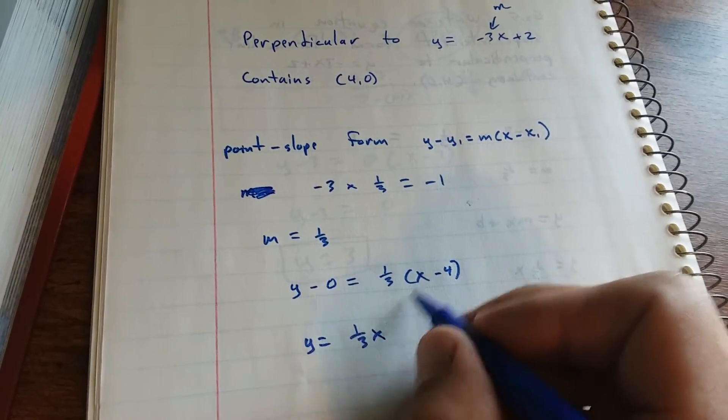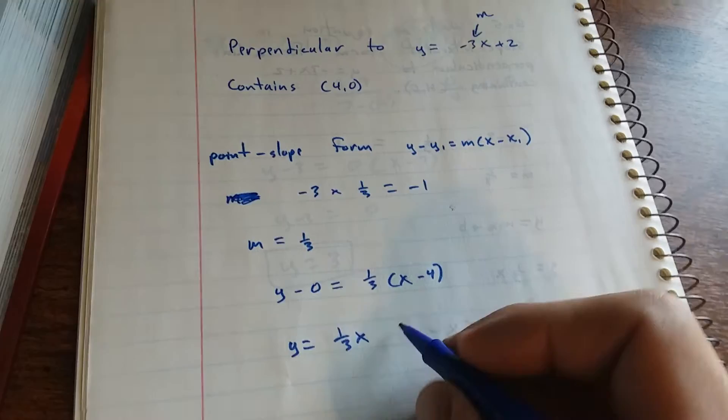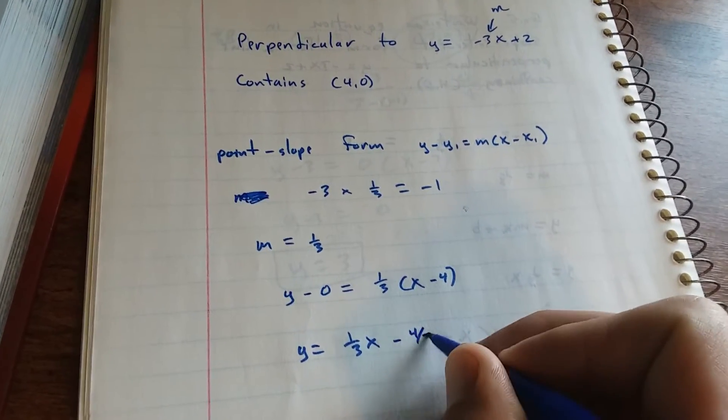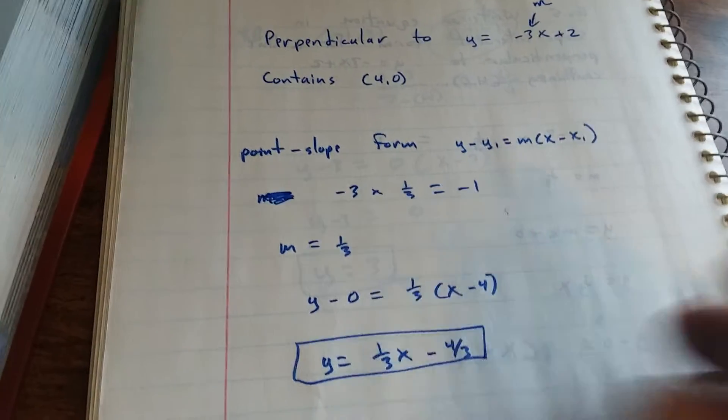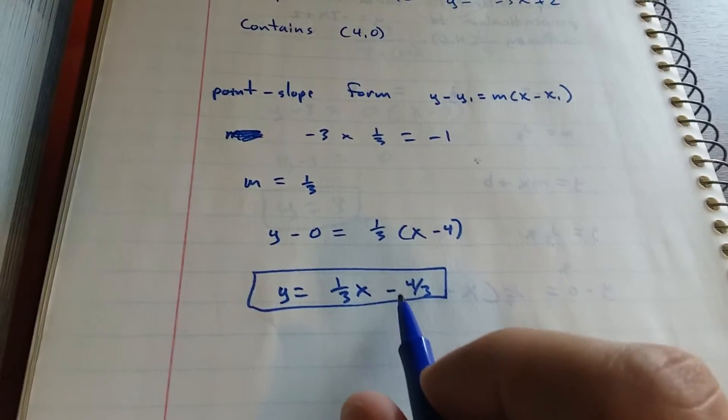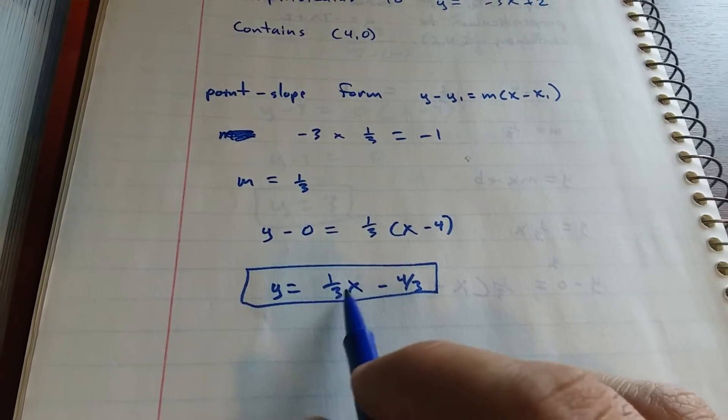Use the distributive property. 1/3 times x is 1/3x. 1/3 times 4 is minus 4/3. So this is what the book is looking for. It wants you to write it in slope-intercept form, y equals mx plus b.